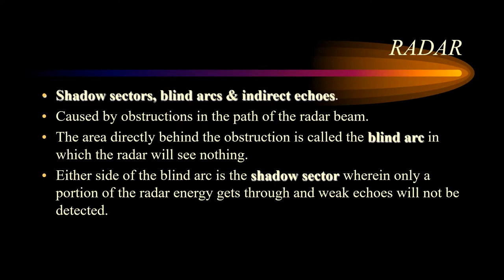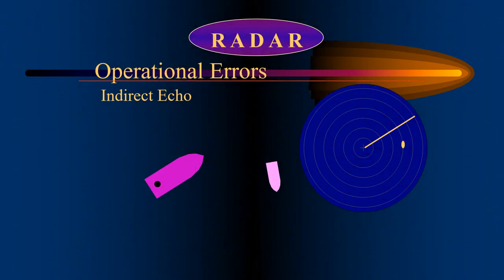We'll start with indirect echoes, which are caused by obstructions in the path of the radar beam. The area behind the scanner is obscured from the radar beam by a funnel, which can cause indirect echoes. Immediately behind the scanner the radar can see nothing, and this is known as a blind arc. Either side of the blind arc there are shadow sectors where only a portion of the radar energy will get through and weak echoes will probably not be detected.